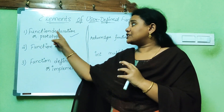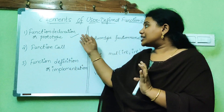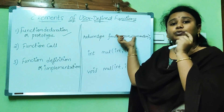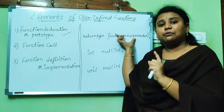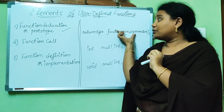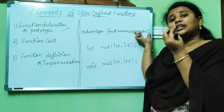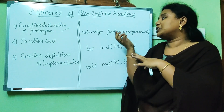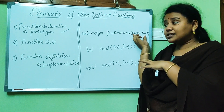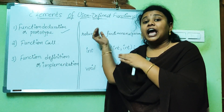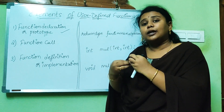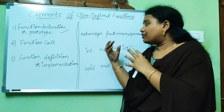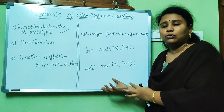Coming to the first part — function declaration or prototype. The syntax of the prototype, how you have to declare a function, is as follows. First, you must always decide a correct function name. After that, specify what type of data you would like to give as input — whether you are giving input or not, and if you are, what type of data — inside brackets. Before the function name, you specify what type of data you would like to return back after the entire implementation. We will understand this better when we discuss a program. Here is a basic prototype with some examples.